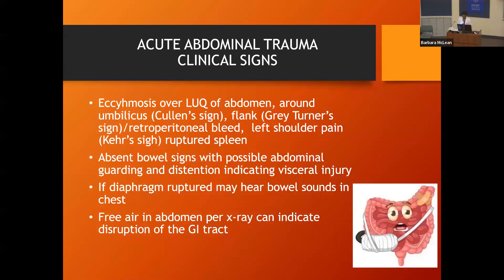We were talking about acute abdominal trauma, which can be caused from a gunshot wound, blunt trauma, motor vehicle crash, or any type of trauma to the abdomen. Different signs you may have include: Cullen sign, which means there's ecchymosis around the umbilical site. If you have kidney damage in the back, a retroperitoneal bleed would be called Gray-Turner. Pain that radiates from the stomach up to the left shoulder is Kerr's sign, and that's an indication of a ruptured spleen.